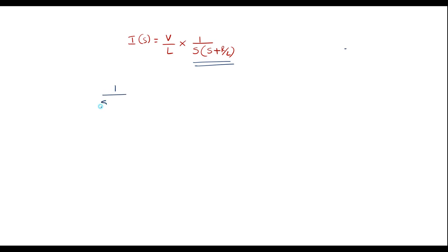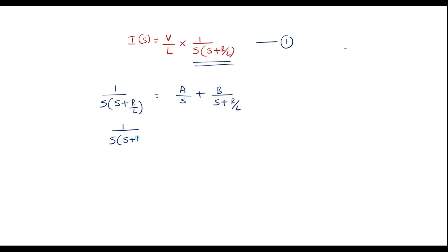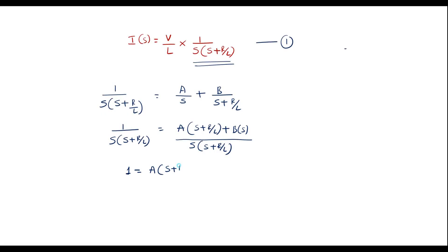That is, let me call equation 1: 1 over s·(s + R/L) is equal to A/s plus B/(s + R/L). Or I can write it as: 1 over s·(s + R/L) equals A·(s + R/L) plus B·s, all over s·(s + R/L). Comparing the numerators on LHS and RHS, I can write 1 equals A·(s + R/L) plus B·s.